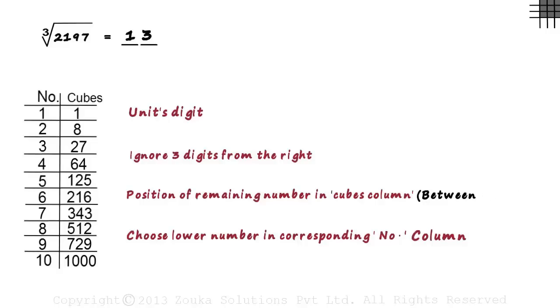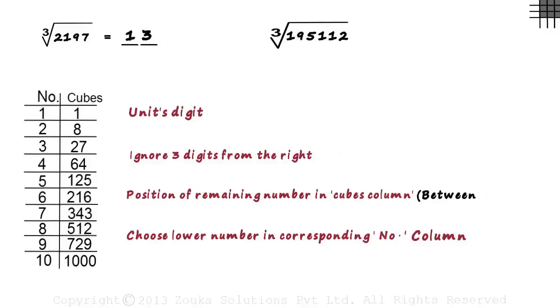Now let's solve another problem so that you understand better. Say we want to find the cube root of 195112. This number is 6 digits long and hence its cube root will be 2 digits long.